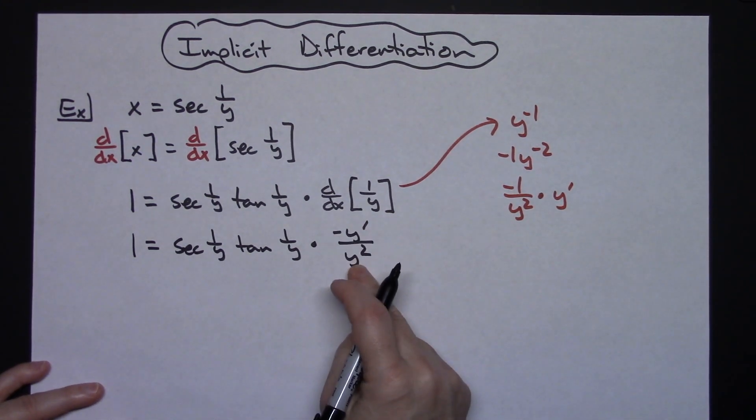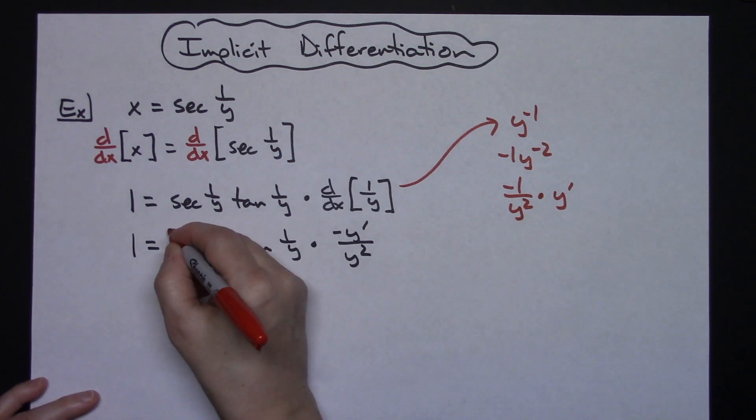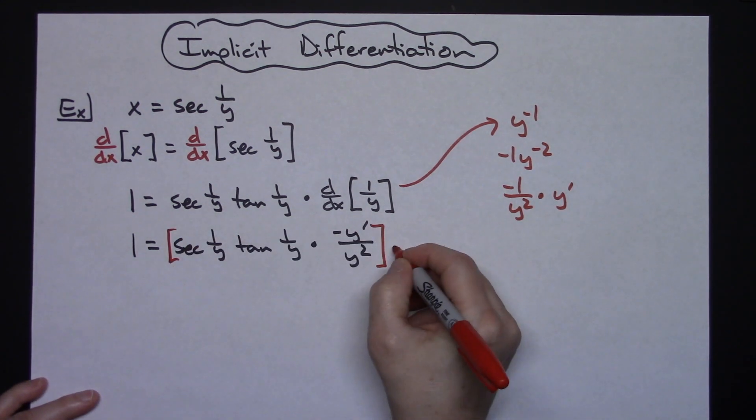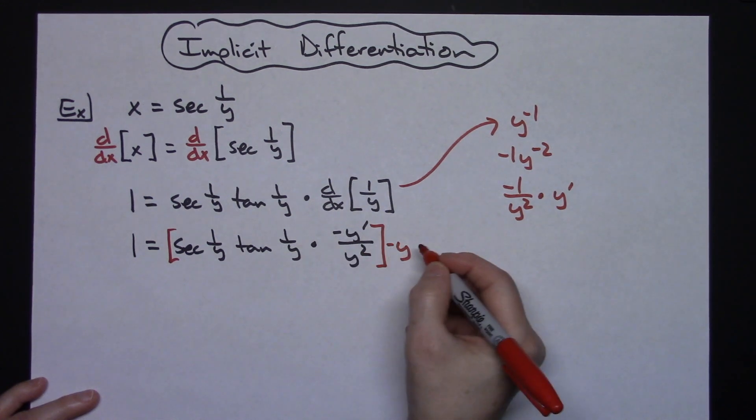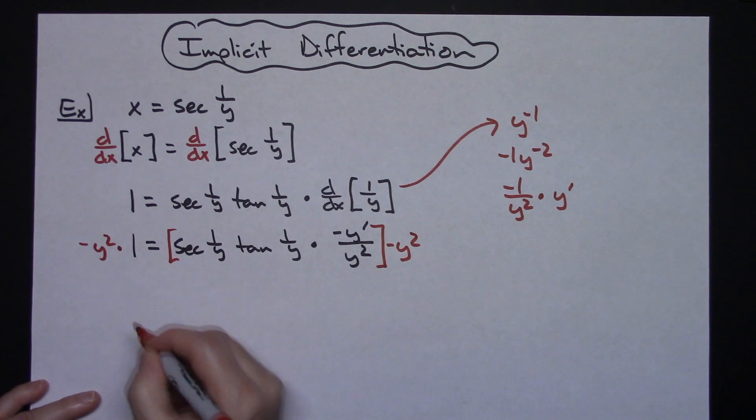At this point I am ultimately going to need to solve for this y prime so I definitely want to get rid of that y squared. So I'm going to multiply both sides of the equation by actually let's go ahead and get rid of the negative too. Let's make it a negative y squared. We'll multiply this side by a negative y squared as well.